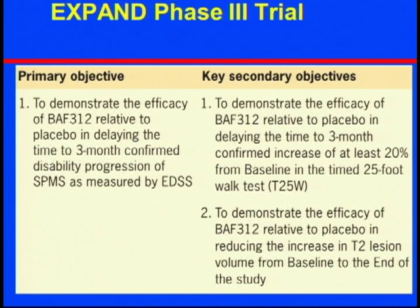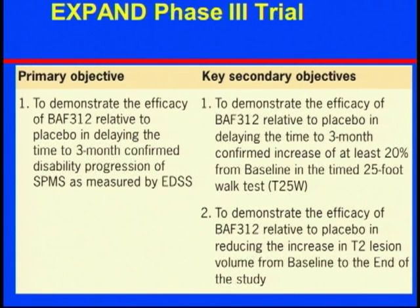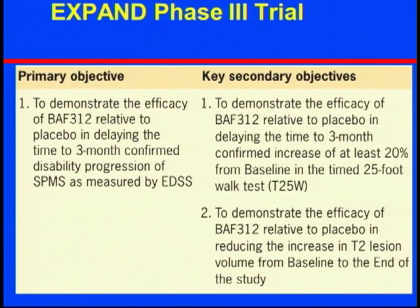We examine neurological status using a score called EDSS — that's the primary outcome measurement. Secondary objectives include measuring walk speed, as the drug presumably will help functional stability by delaying worsening walking speed. The other secondary objective is to compare to placebo in reducing MRI lesions and reducing brain atrophy.